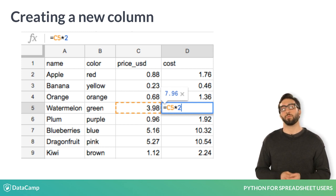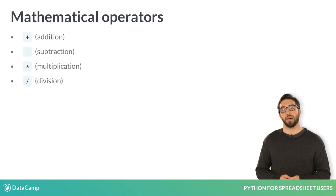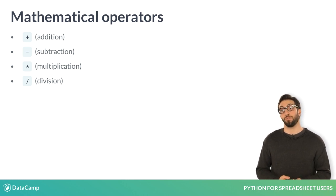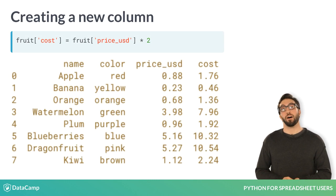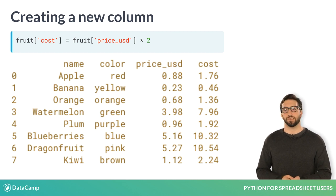Fortunately, we have the same mathematical operators at our disposal in Python. So if we buy two of each fruit, we still multiply by two using the asterisk. To add the cost column to our data frame, we simply define a cost column in fruit and designate its value as two times the price column.